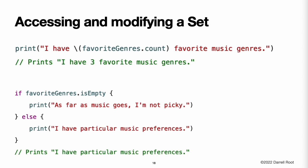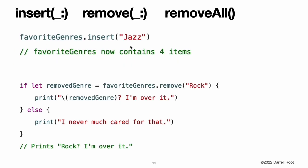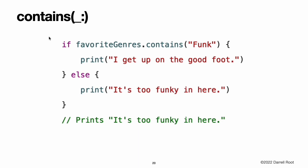Accessing and Modifying a Set. You access and modify a set through its methods and properties. To find out the number of items in a set, check its read-only count property. Use the boolean isEmpty property as a shortcut for checking whether the count property is equal to zero. You can add a new item into a set by calling the set's insert method. You can remove an item from a set by calling the set's remove method, which removes the item if it is a member of the set and returns the removed value, or returns nil if the set did not contain it. Alternatively, all items in a set can be removed with its removeAll method. To check whether a set contains a particular item, use the contains method.